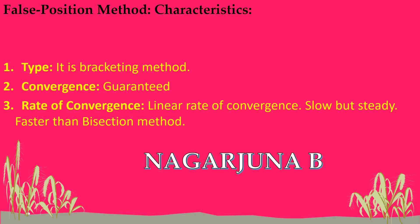Convergence guarantee means that whatever values we consider as intervals, we make successive iterations to find the root of an equation, and whatever root we get will be a correct approximate root for the given equation. It is guaranteed — we always get a root within the given interval.